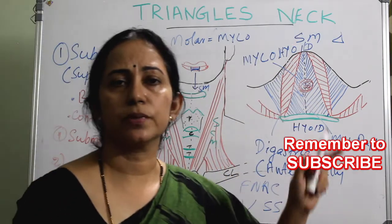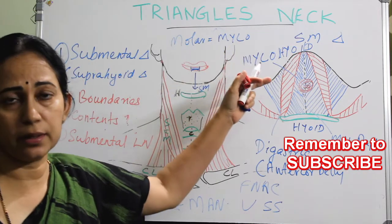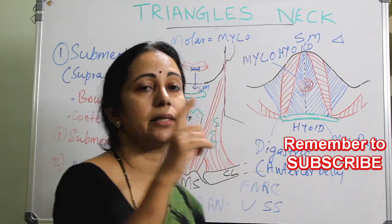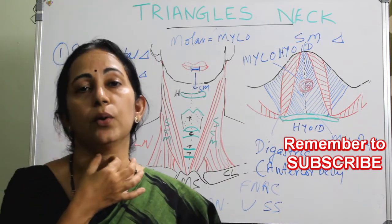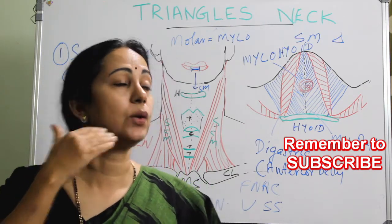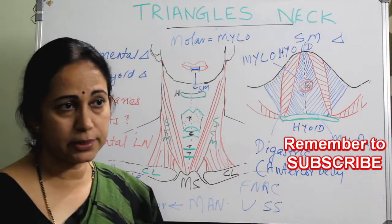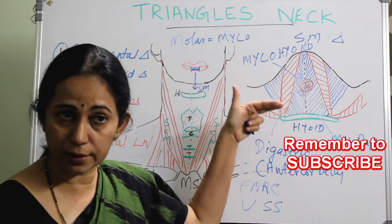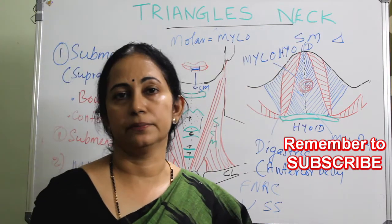The functions of the mylohyoid muscle are clear from the picture: it is attached between the mandible and the hyoid bone. When the mandible is fixed, it elevates the hyoid bone. When the hyoid bone is fixed, it depresses the mandible.